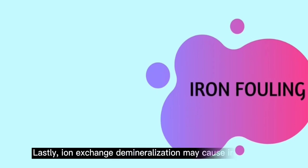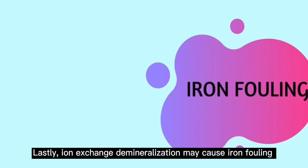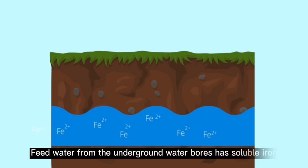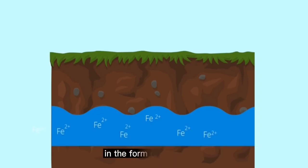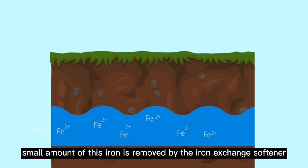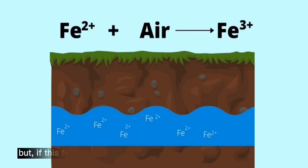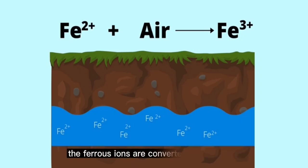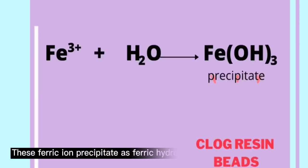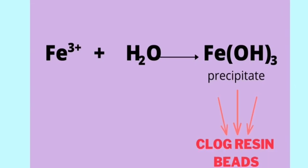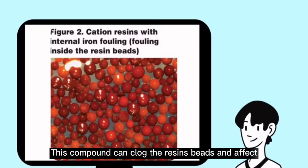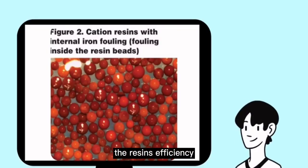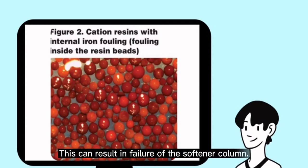Lastly, ion exchange demineralization may cause iron fouling. Feed water from underground water bores has soluble iron in the form of ferrous iron. Small amounts of this iron are removed by the ion exchange softener. But if this feed water comes in contact with air before treatment, the ferrous ions are converted to ferric ions. This ferric ion precipitates as ferric hydroxide after reacting with water. This compound can clog the resin beads and affect the resin efficiency. This can even result in failure of the softener column.